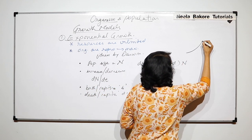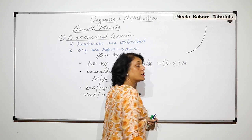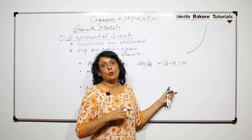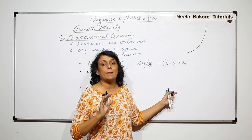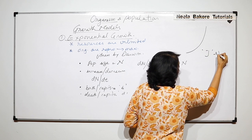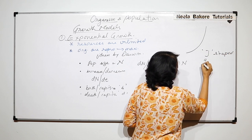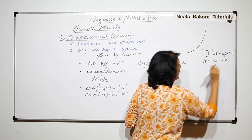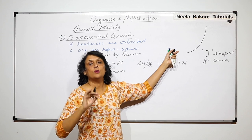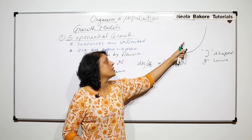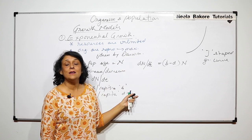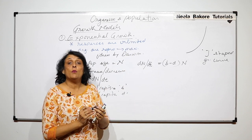If we plot this type of growth, we get a curve where initial growth is small or slow, and then because resources are unlimited, it grows in an exponential manner. This is known as the J-shaped growth curve. As the curve indicates, the population is going to grow continuously because nothing is limited.